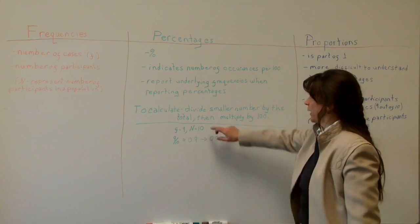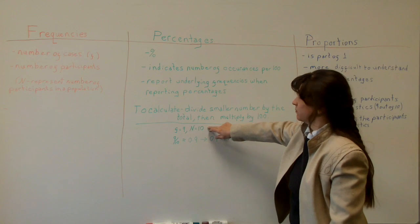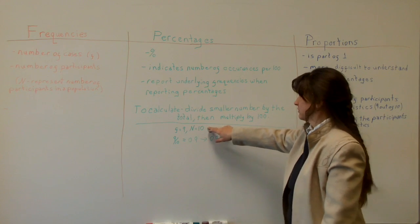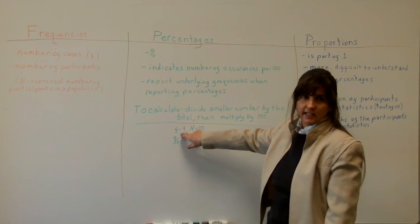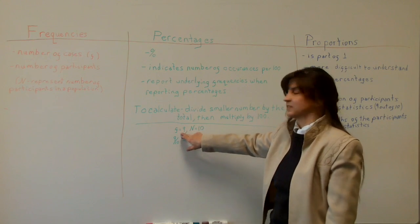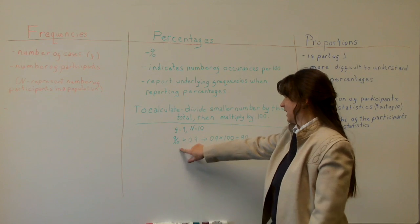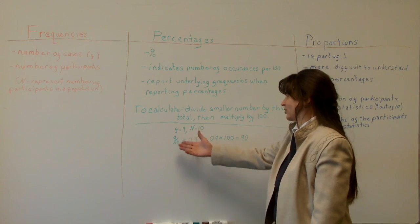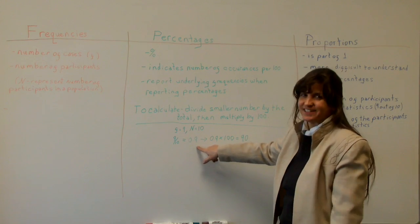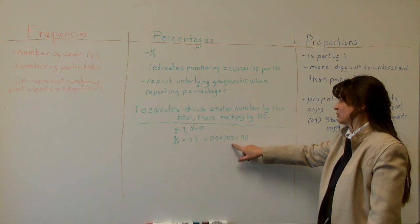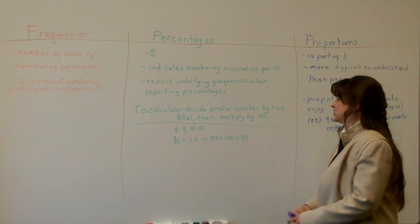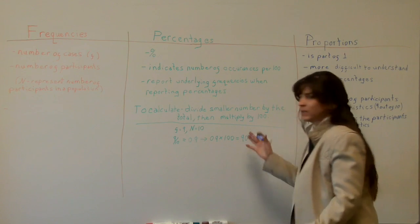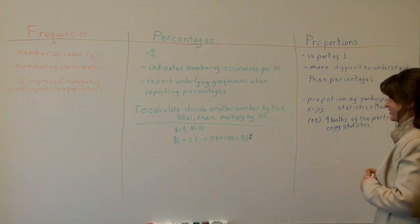For example, we have a population of 10 individuals, and the frequency is 9 out of 10 who enjoy statistics. So 9 tenths equals 0.9, and 0.9 times 100 equals 90 percent. So 90 percent of the population are enjoying statistics in this particular example.